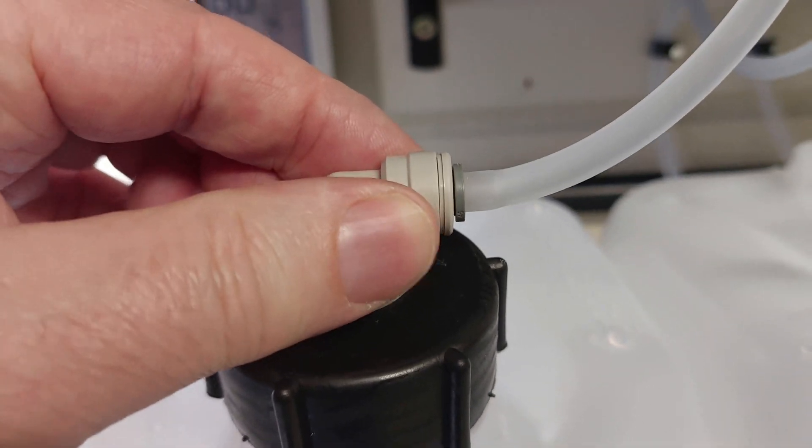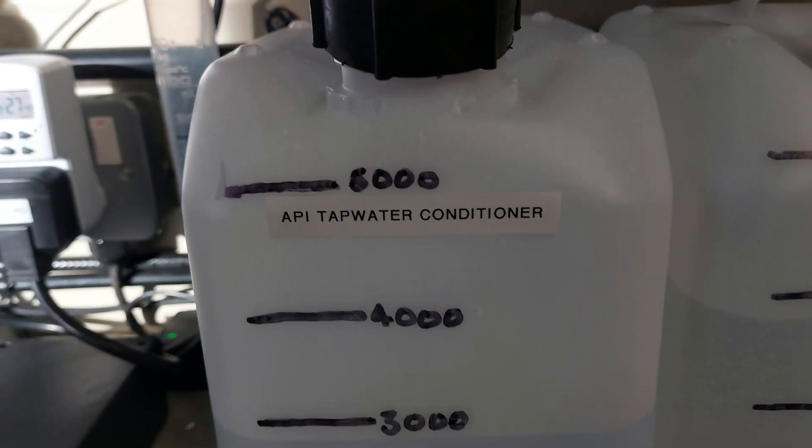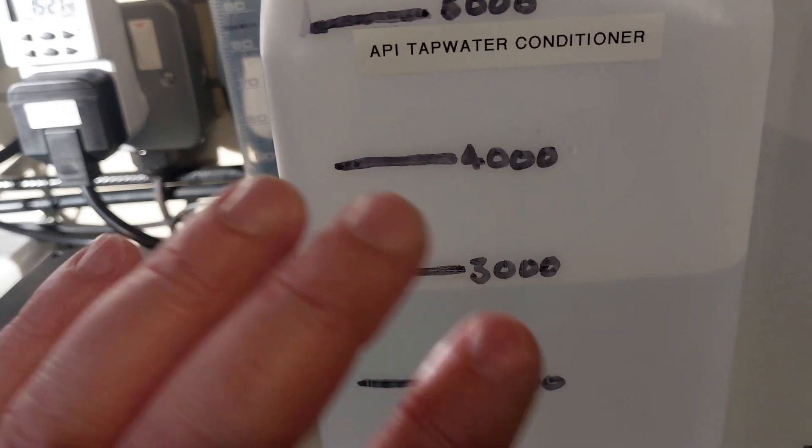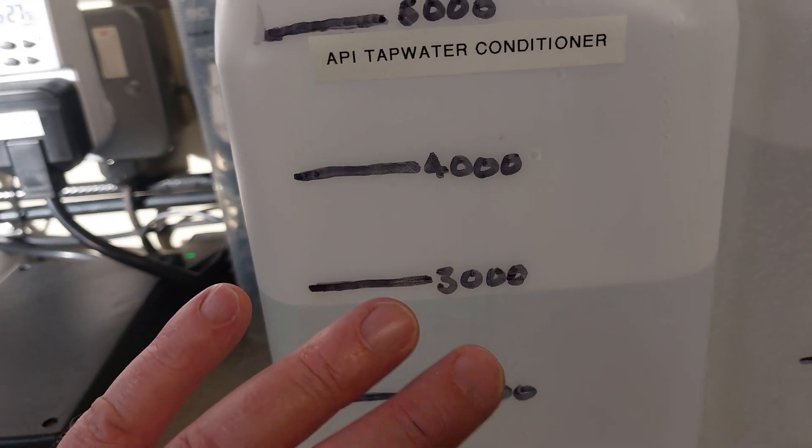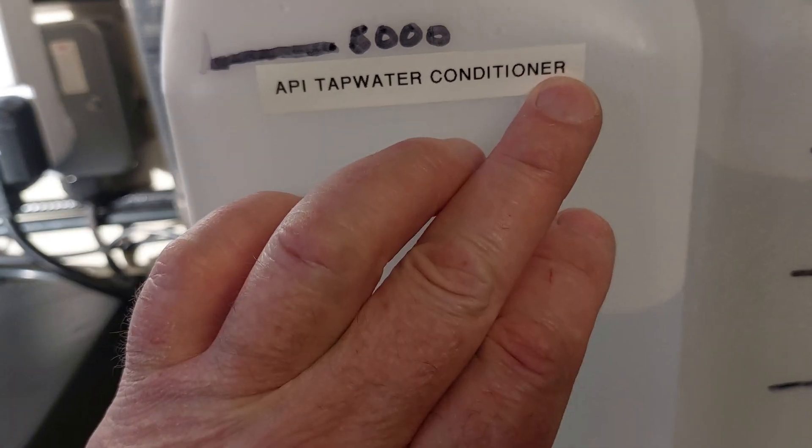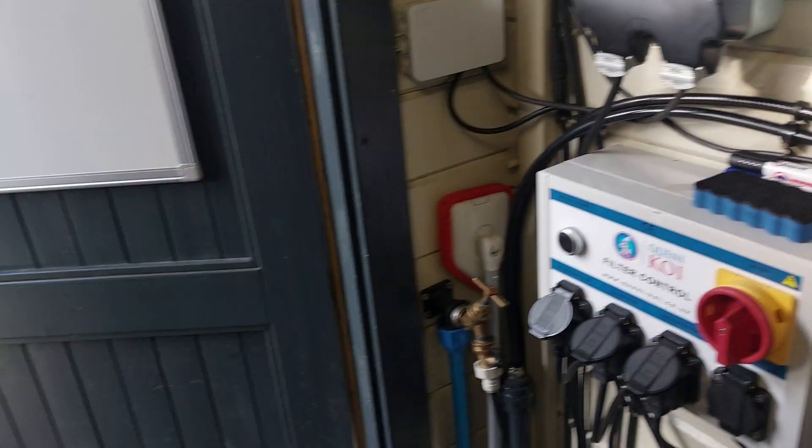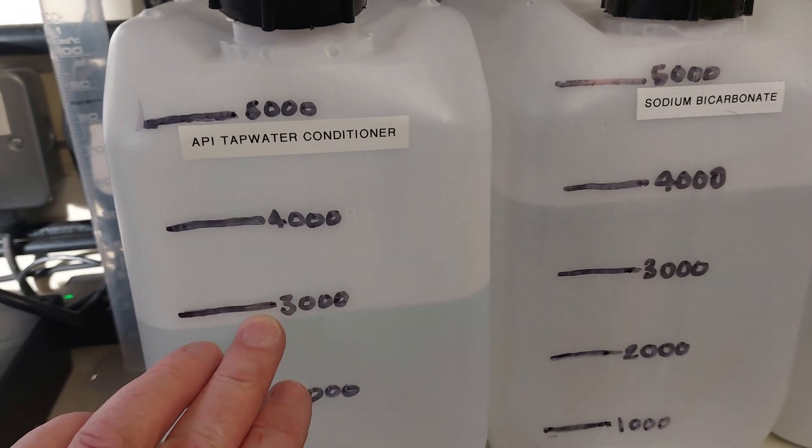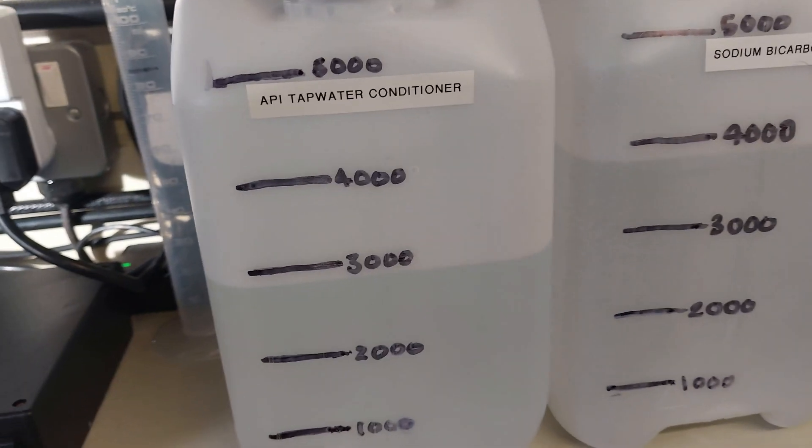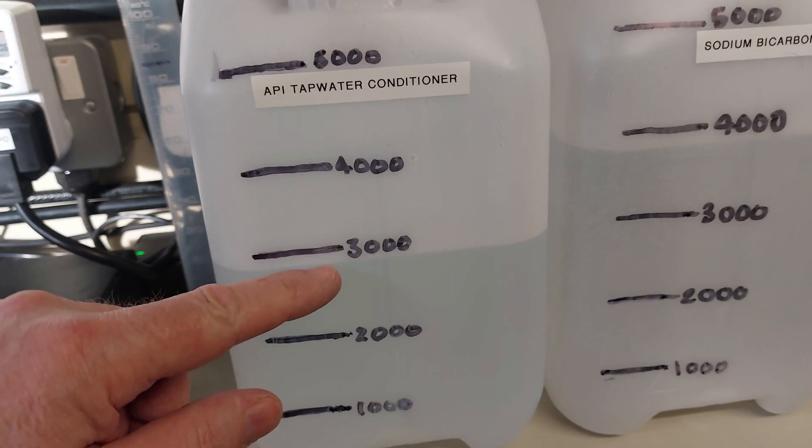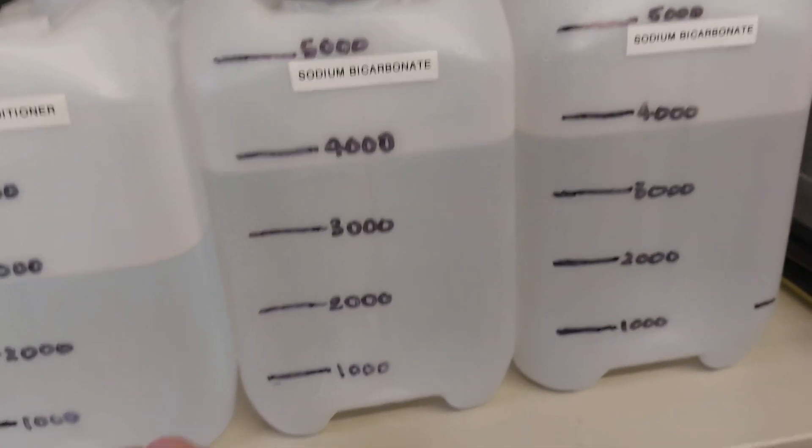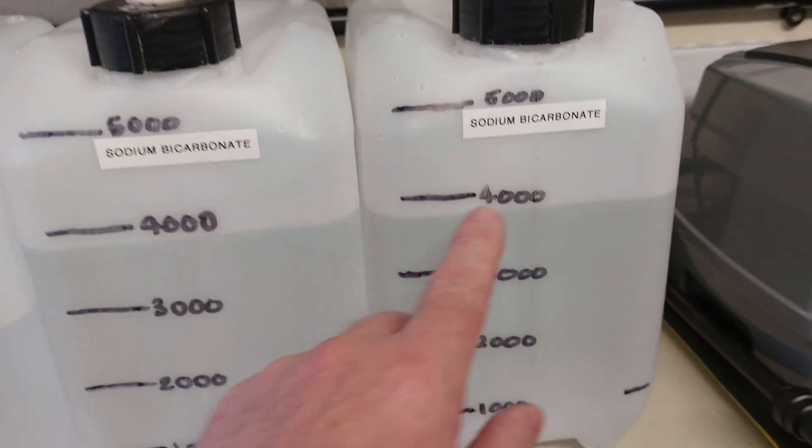At the moment, I've got these set to dose. I think the tap water conditioner is three liters dosing 100 mil a day. That's diluted down, just 150 mils of API tap water conditioner for my two and a half thousand gallons, diluted down so it only doses 100 mil a day. That's 150 mil of tap water conditioner in 2.85 liters of boiled purified water. And the sodium bicarbonate is just a four liters mix with about 300 grams of sodium bicarbonate.